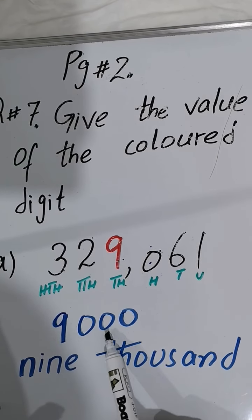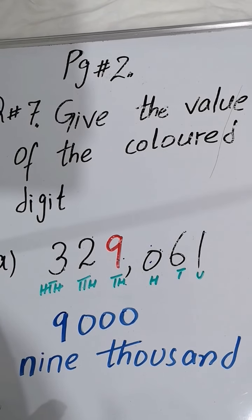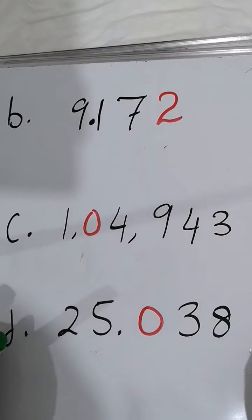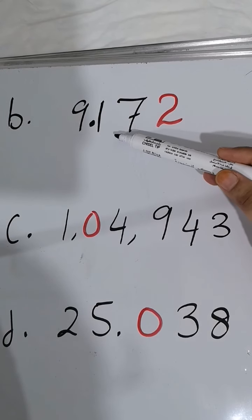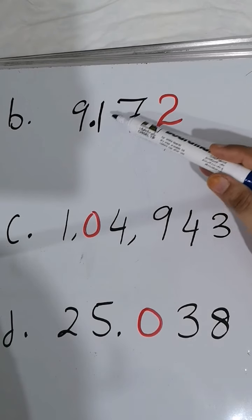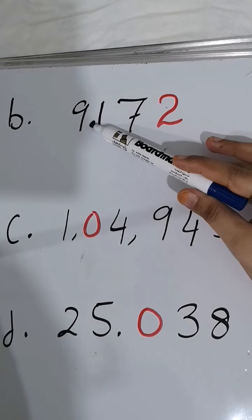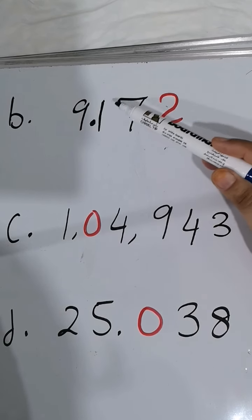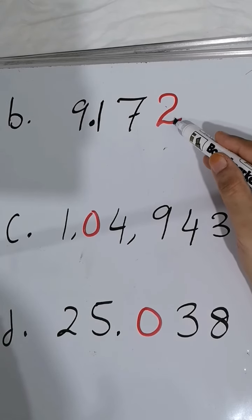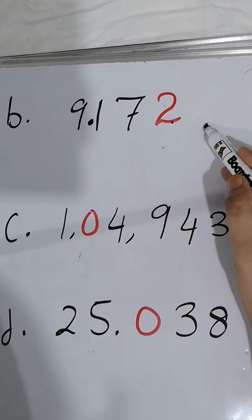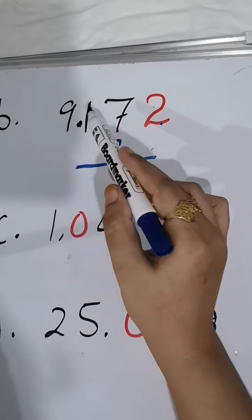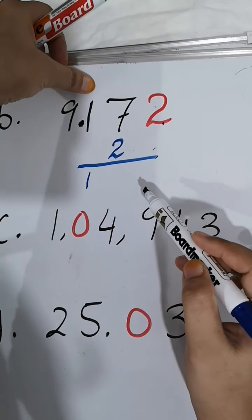The next part is 9.172. It's a decimal. Whenever you have to give the value of a number coming after the decimal, write that number as the numerator. You have to give the value of 2, so on top you will write 2. In the denominator, you will write at the place of decimal 1, and after how many numbers? One, two...